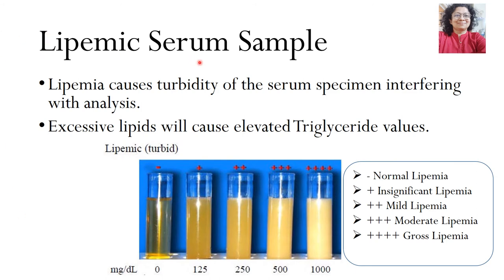Next is the lipemic serum sample. Lipemia is turbidity of the serum specimen due to the presence of lipoproteins or chylomicrons. The excessive lipids will cause elevated triglyceride values and will also interfere with various other parameters. The degree of lipemia is graded using a blue sheet — if a black line is drawn across it, the visibility of the line will change, and there are grades based on this.